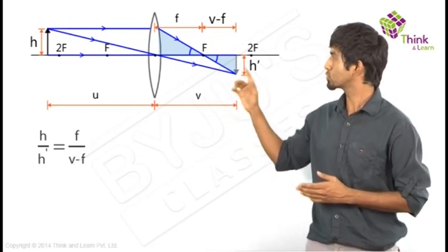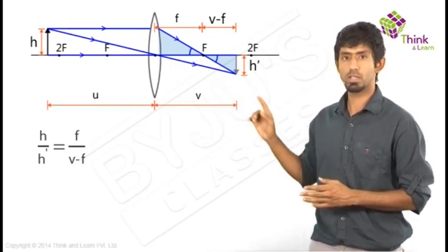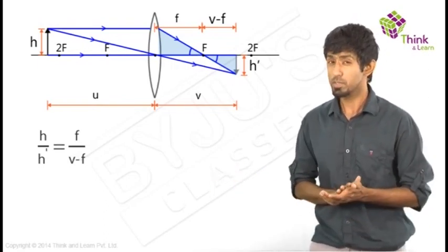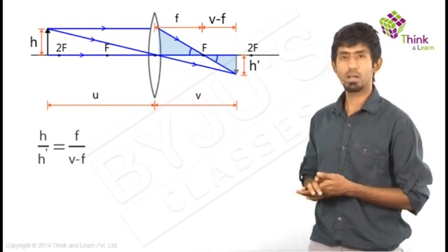So we have one equation. So you take those two similar triangles out and write that equation, and that's what you get. Now what do we have to do? Look for another pair of similar triangles. Right. And there you get one more.